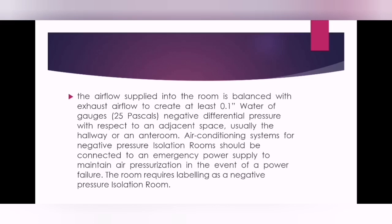There must be a 25 Pascal negative differential pressure with respect to the adjacent space. For example, in two rooms — one isolation and one simple patient room such as an ICU — the isolation room will be at negative differential, meaning it will be at minus 25 Pascals relative to the other room. Usually the hallway or an ante-room — which is the control room connected with the isolation room — serves as the reference.